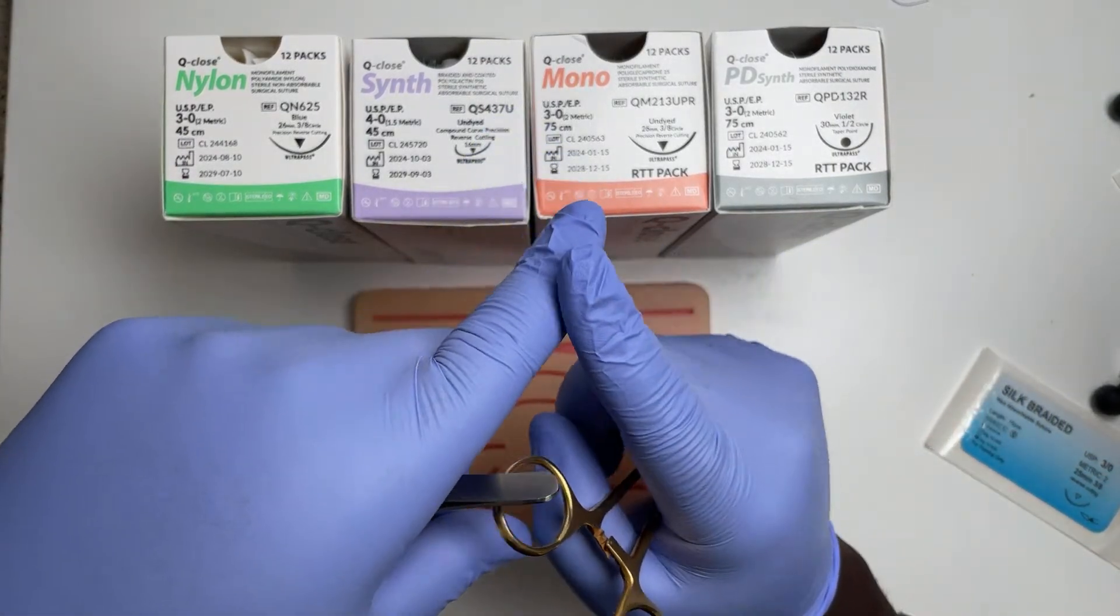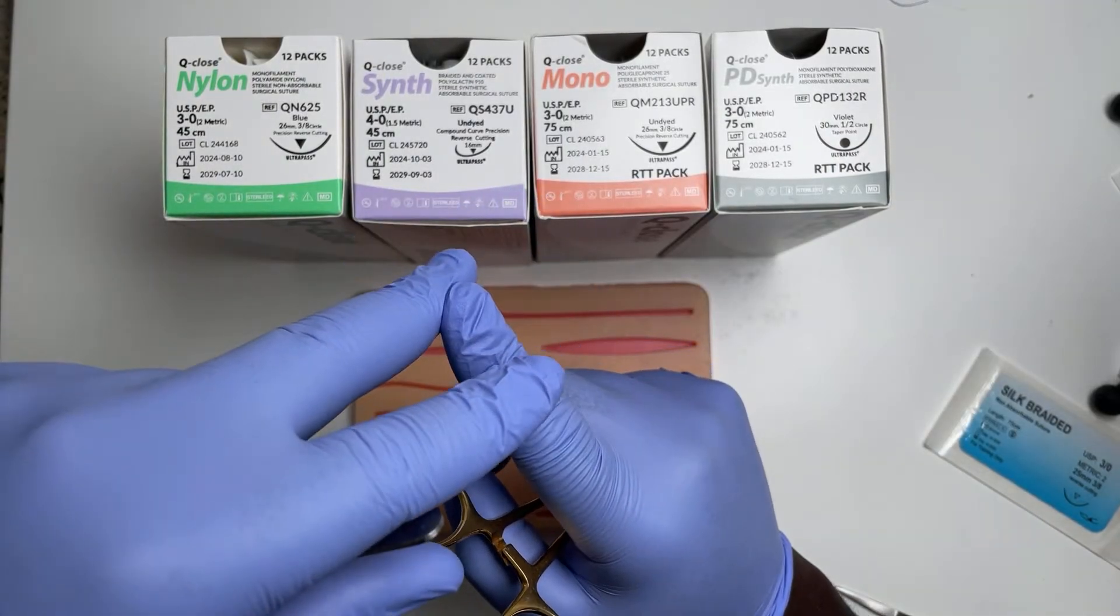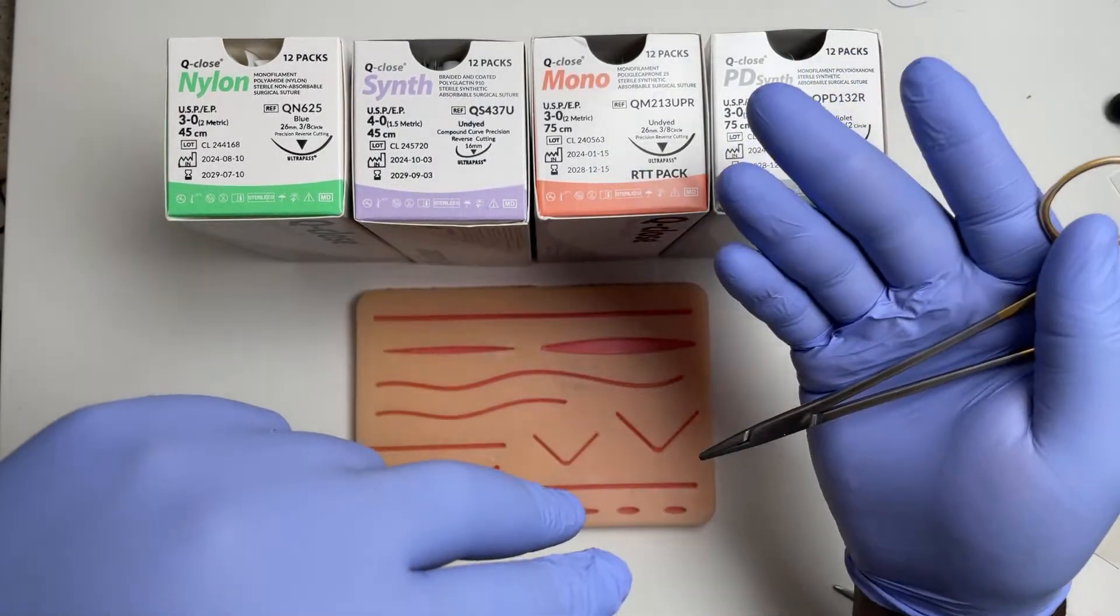So principles: dissolvable sutures in children because they don't like having stitches removed. Monofilament where you think there's a higher risk of infection, so you've debrided a wound.